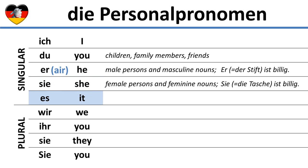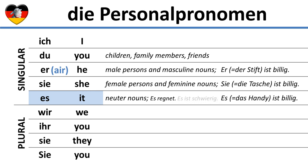Es is used to replace all neuter nouns. For example, the mobile phone is cheap: es, das Handy, ist billig. Es is also used in sentences like it is raining, es regnet, or it is difficult, es ist schwierig.